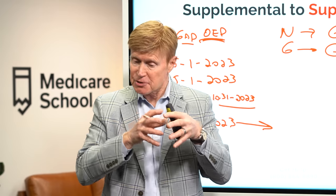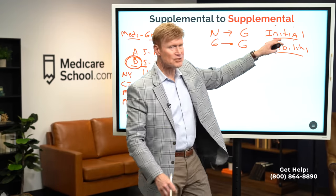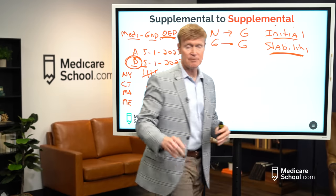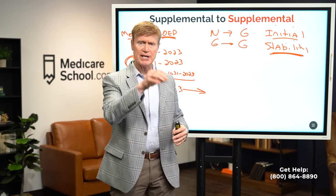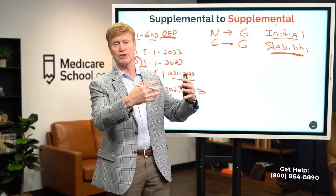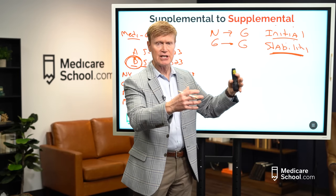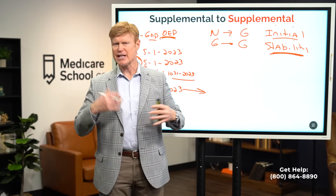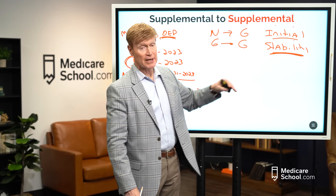Companies with more policyholders spread the risk further, resulting in more stable rates. I prefer national carriers over regional ones for this reason. When choosing a supplemental plan, consider both the initial premium and rate stability — I'd rather go with a carrier that's slightly higher initially but has proven to be very stable over the last five to ten years. If rates increase and you want to switch but can't pass underwriting, you'll be stuck with the carrier that keeps raising rates more drastically.